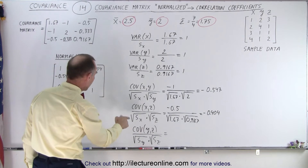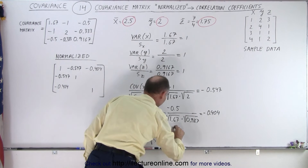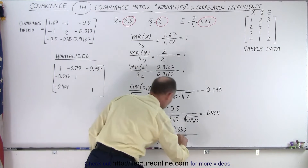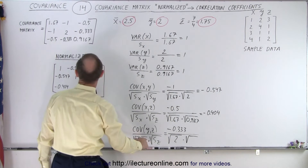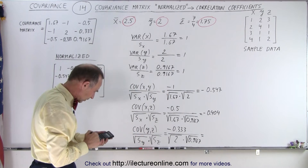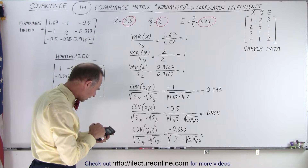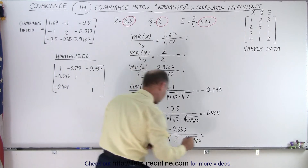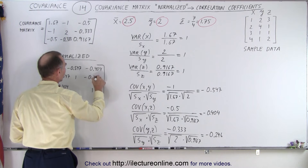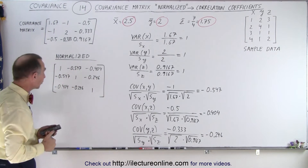One more: the covariance of Y and Z is negative 0.333, divided by the square root of the variance of Y, which is 2, multiplied times the square root of the variance of Z, which is 0.9167. So one third divided by the square root of 2, divided by the square root of 0.9167, equals negative 0.246. So negative 0.246 fills in those positions. Now we have all the correlation coefficients.